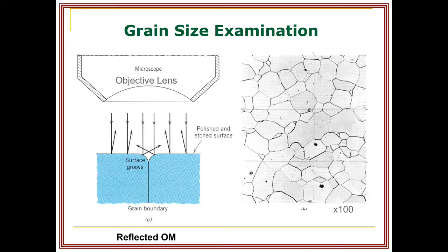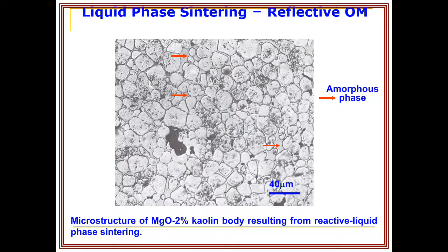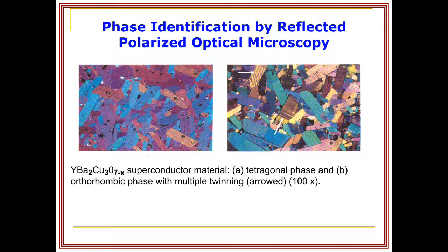Looking at this 100x magnification microstructure, you can clearly observe different grain sizes. This is related to liquid phase sintering — the microstructure shown is taken for MgO₂ and the body resulting from the reactive liquid phase. Another example is phase identification by reflected polarized optical microscopy.